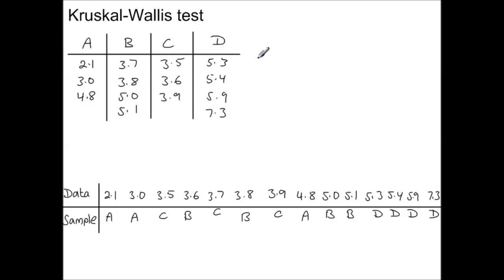So the next step would be to rank all of the data together, starting with rank 1 for the smallest data value, so that's 2.1. So that's rank 4, 5, 6, 7, 8, 9, 10, 11, 12, 13, 14, and we have 14 values here.